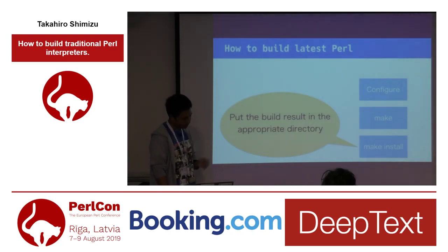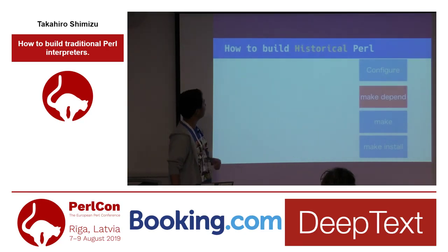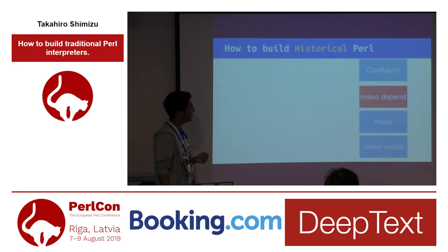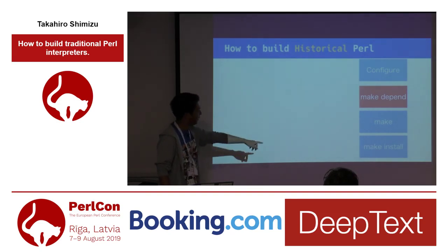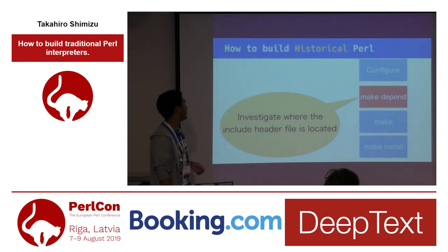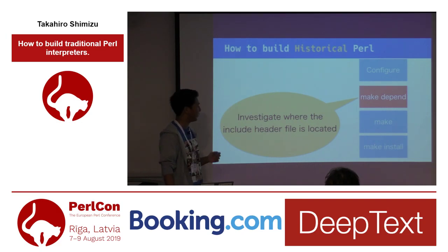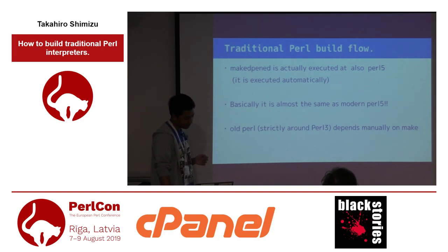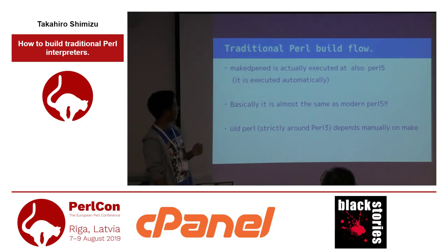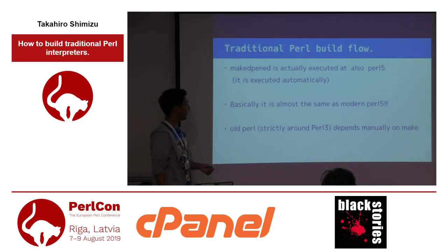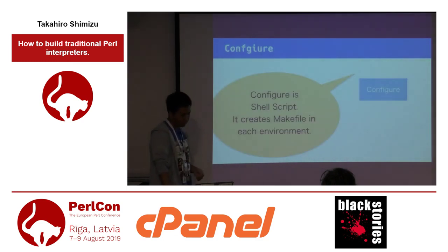In historical Perl, make depend is executed between configure and make. What is make depend? Make depend identifies where included header files are located. Make depend is also executed in Perl 5.0, but it runs automatically. In older Perl, you run make depend manually.